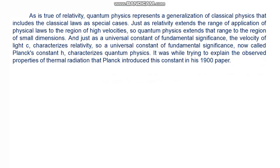Quantum physics represents a generalization of classical physics that includes classical laws as special cases. Just as relativity extends the range of application of physical laws to the region of higher velocities, quantum physics extends that range to the region of small dimensions. Just as a universal constant, the velocity of light c, characterizes relativity, so a universal constant called Planck's constant h characterizes quantum physics. It was while trying to explain the observed properties of thermal radiation that Planck introduced this constant in his 1900 paper.